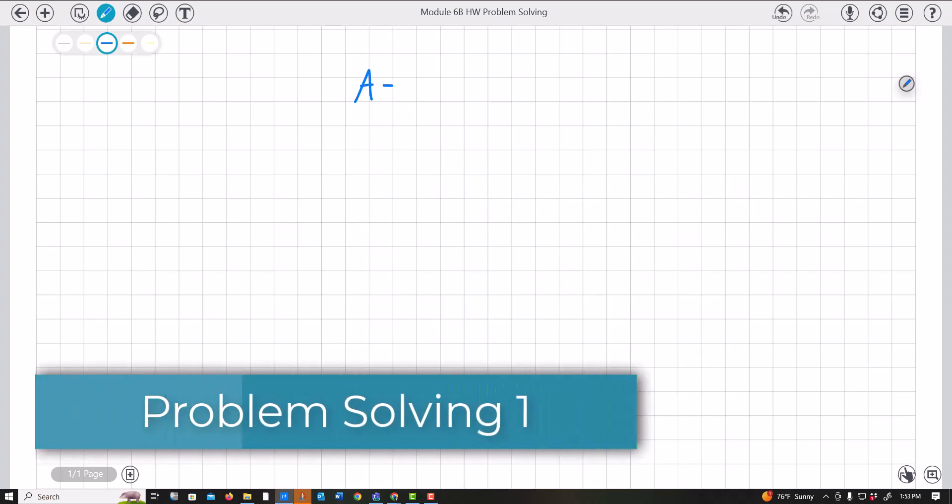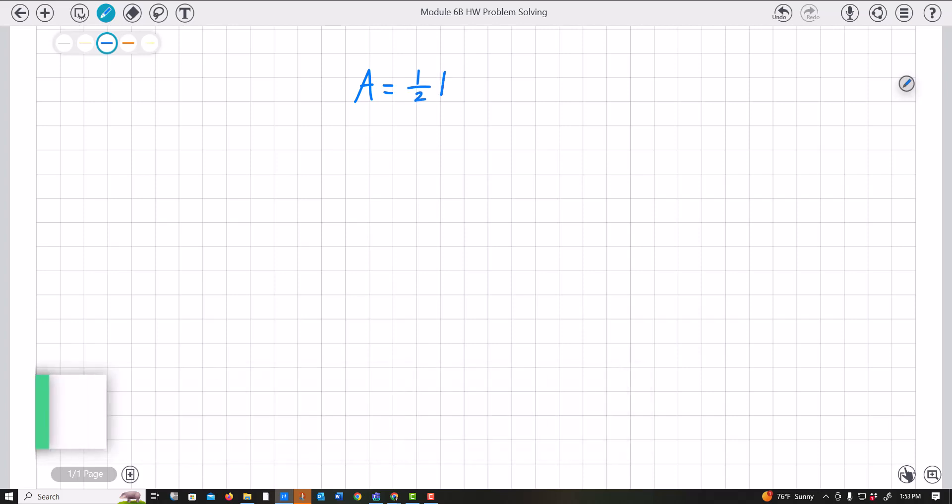Let's say you were given this formula: A equals 1 half h times (B plus b).